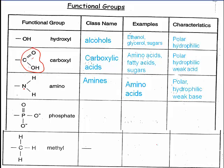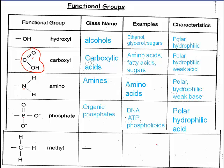Phosphate groups are also immediately recognizable because they have a phosphorus bonded to three oxygens. These form organic phosphates, and you would find them in molecules like DNA, ATP, and phospholipids. Like the others, they are polar and hydrophilic, and they're also weak acids.